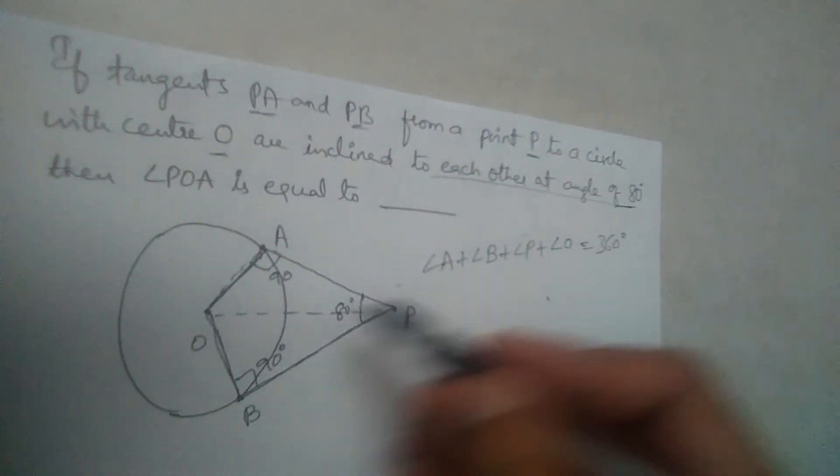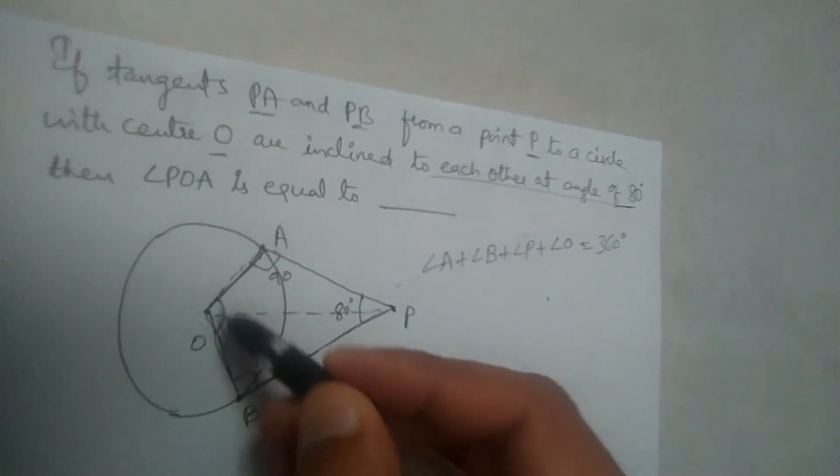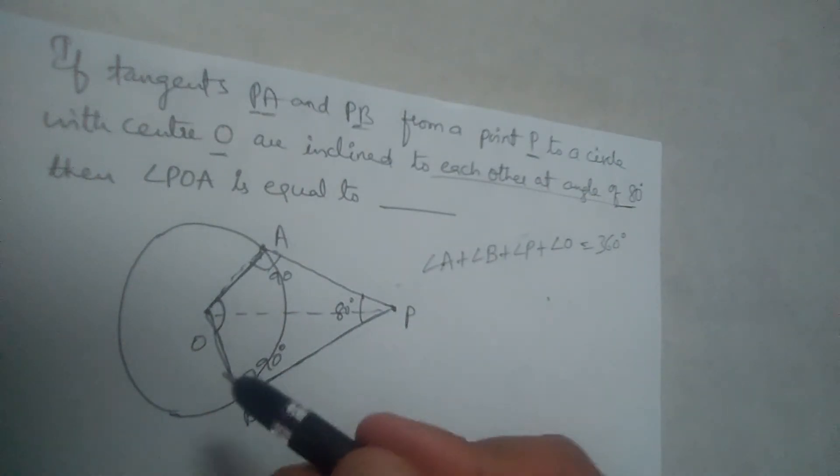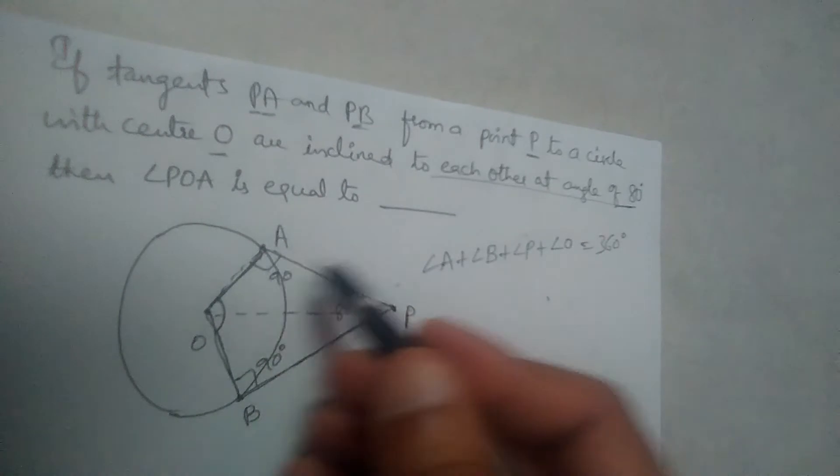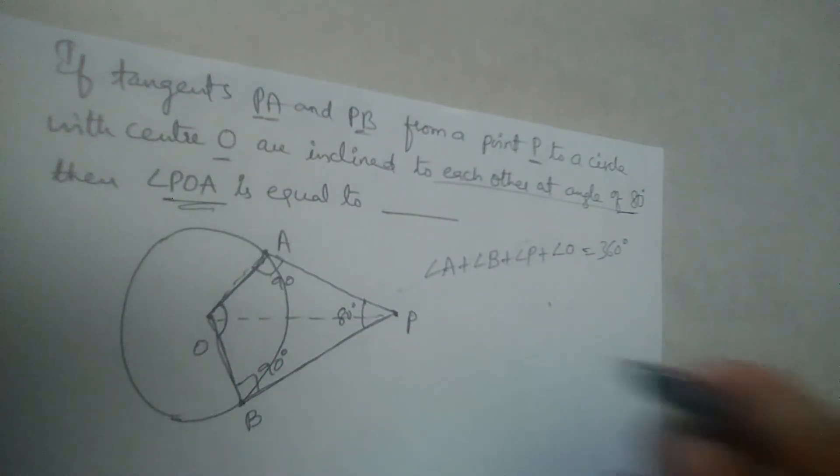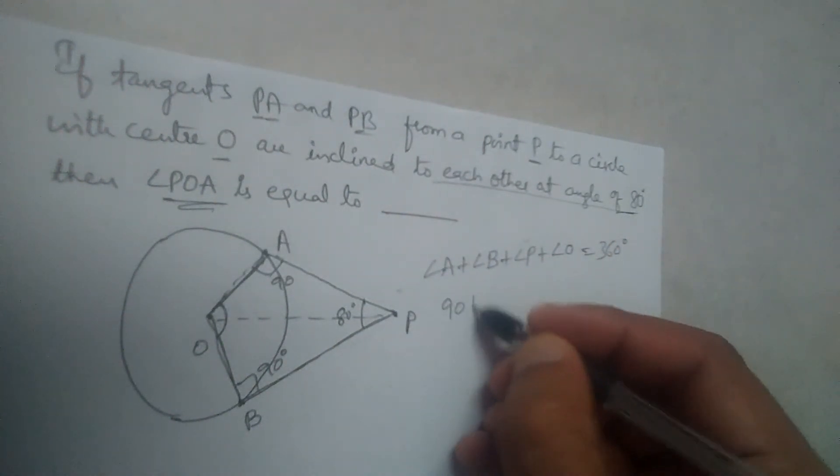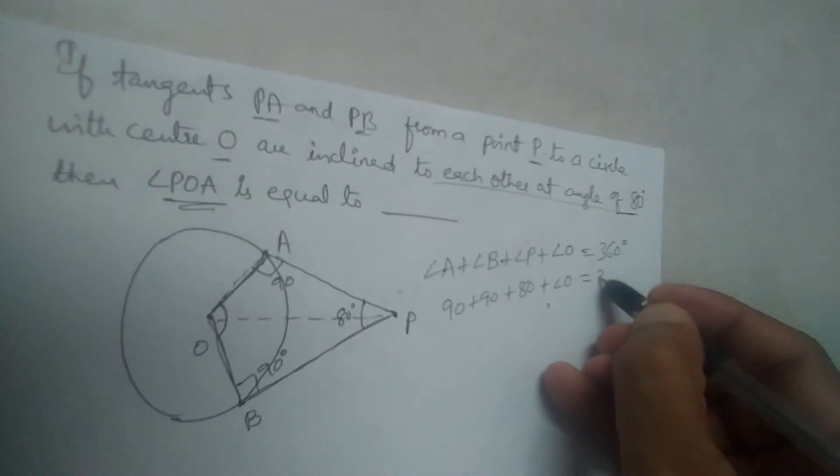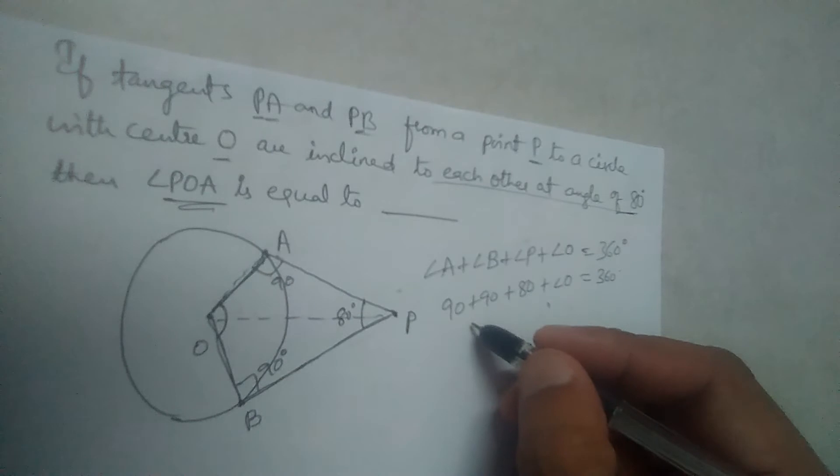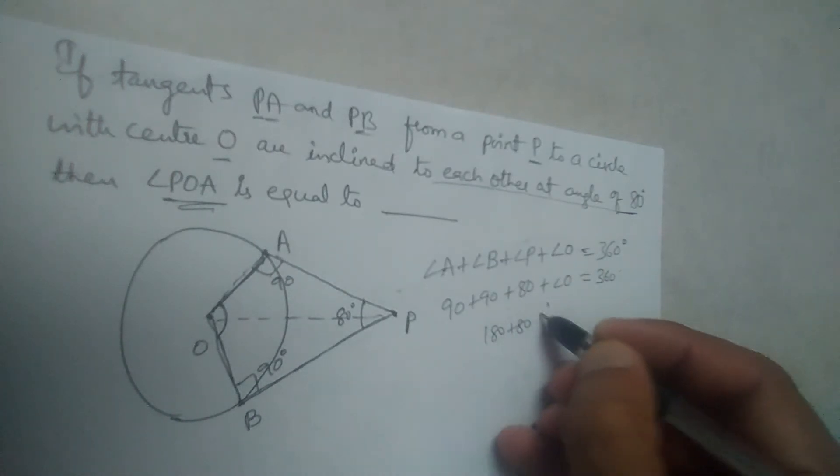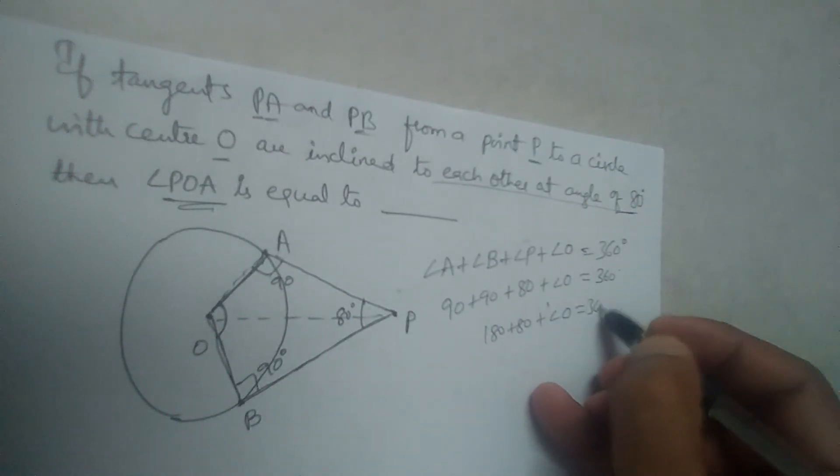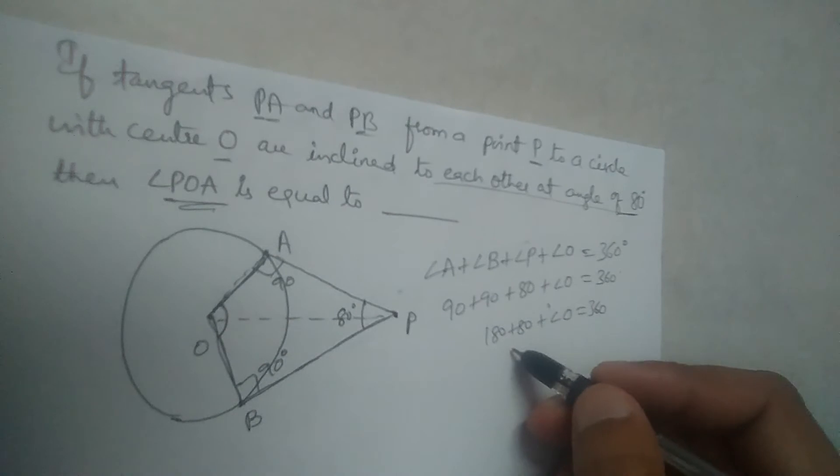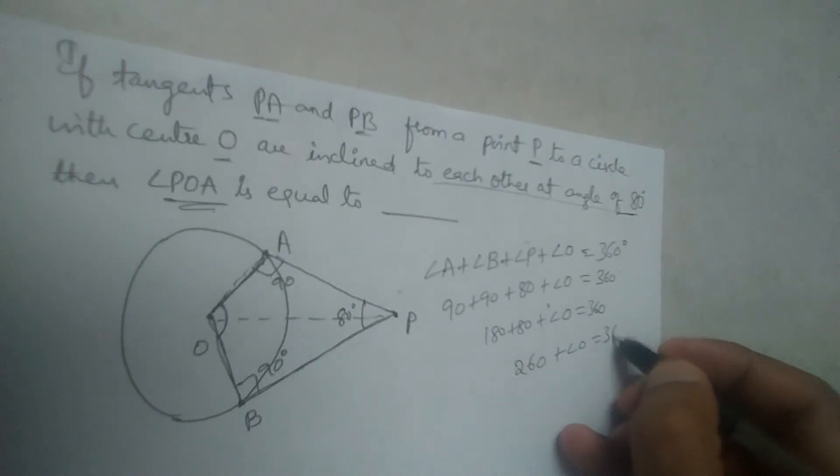So after finding this angle, if we have that, we will get POA. Angle POA. So let us do that. 90 plus 90 plus 80 plus angle O is equal to 360 degrees. 90, 90, 90, 180 plus 80 angle O is equal to 360.